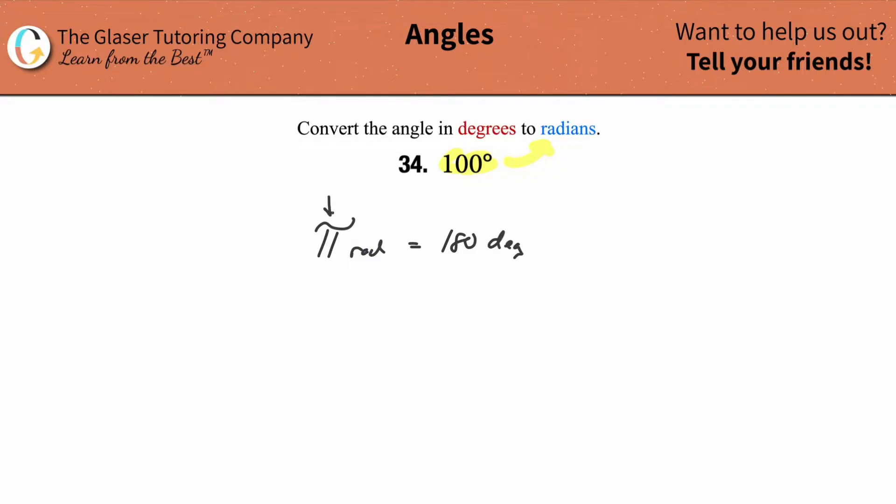In other words, remember pi is a number, 3.14. So in other words, one radian is approximately 57.3 degrees.